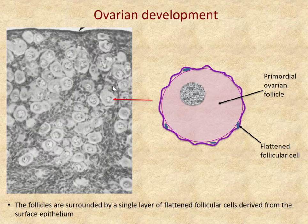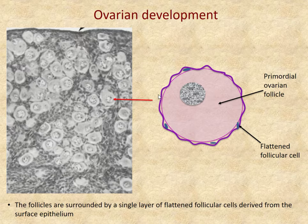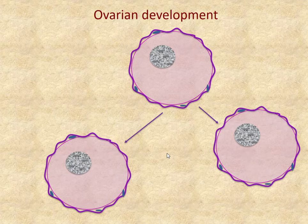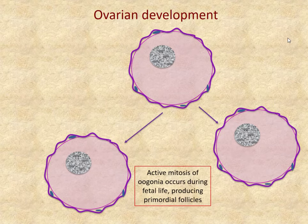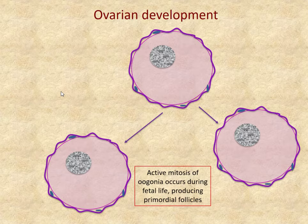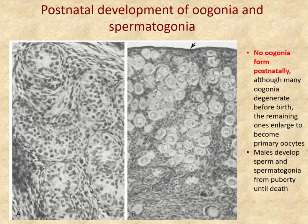Histologically, a primordial follicle contains a germ cell surrounded by flattened follicular cells derived from the mesothelium of the dorsal wall — collectively called a primordial ovarian follicle. The oogonia can undergo active mitosis before birth, but at birth they are no longer mitotically active. Those that haven't degenerated by that time enlarge and become primary oocytes, which are no longer primordial follicles.